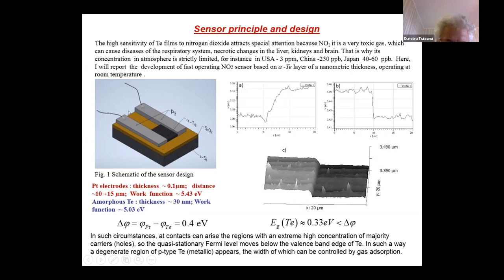Here you can see the schematic of sensor design. It consists of a silicon substrate covered by silicon oxide and two platinum electrodes. Between these two platinum electrodes, an amorphous nanometric layer of tellurium is grown.